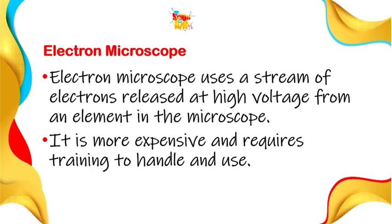Electron microscopes use a stream of electrons released at high voltage from an element in the microscope. They are more expensive and require training to handle and use. The electron microscope is used in large laboratories to view DNA samples. It uses a stream of electrons from an element, which is why it is more expensive, as those elements can be hard to obtain.